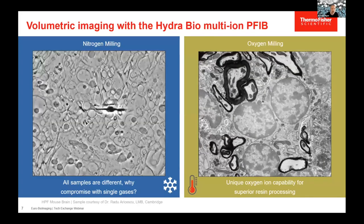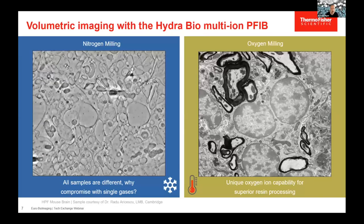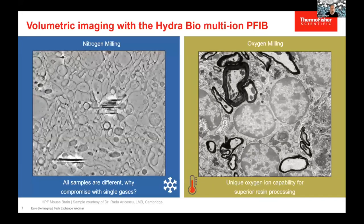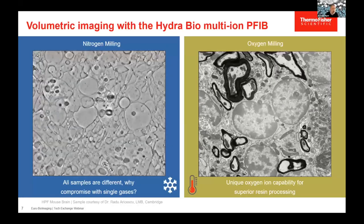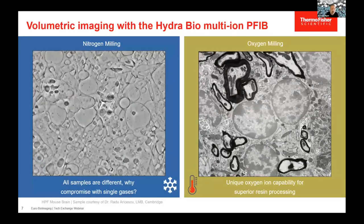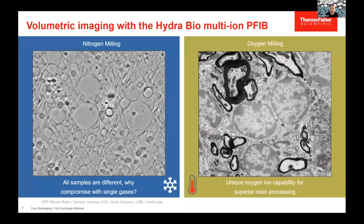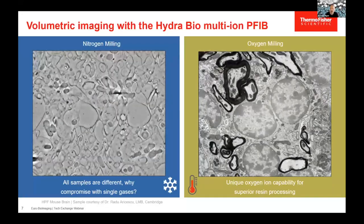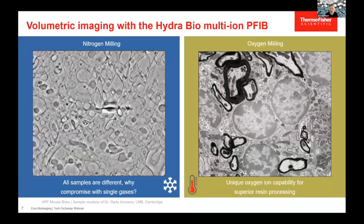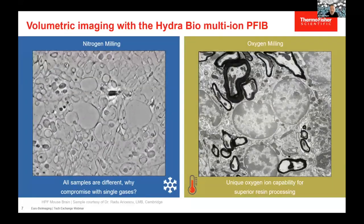Here's an example of such a dataset imaged inside the HYDRA system. The HYDRA BioSystem is a new dual-beam system. This is a cryo sample — a plunge-frozen sample — imaged here using secondary electron signal detected from the sample. Utilizing the plasma FIB source allows us to acquire quite homogeneous 3D data from cryo samples. On the right-hand side, a conventionally prepared sample using high-pressure freezing, freeze substitution, and resin embedding with heavy metals is shown, where backscattered electron signal is detected.